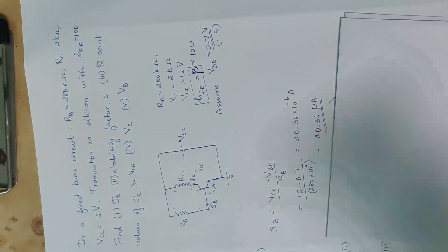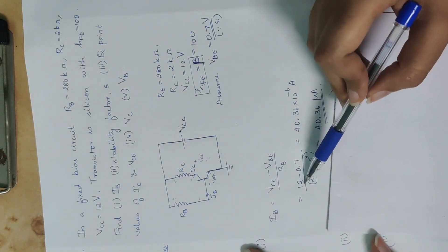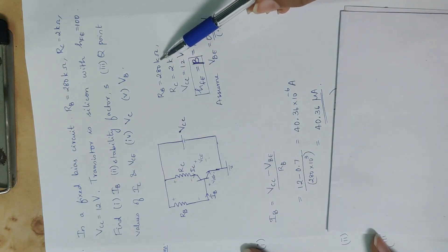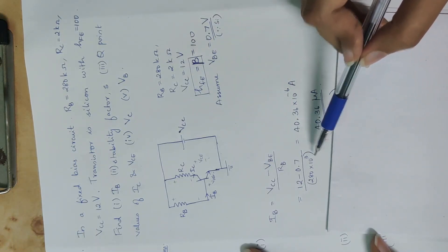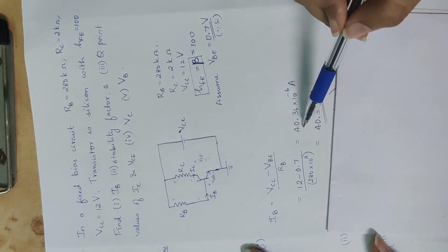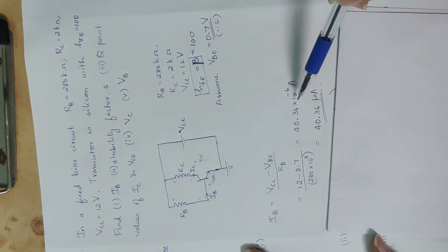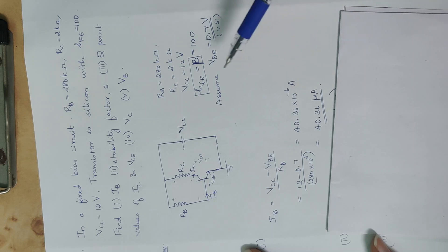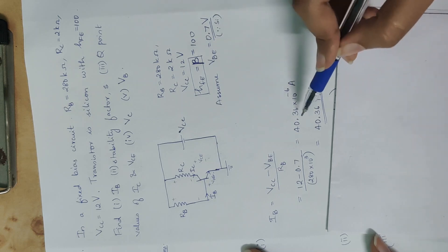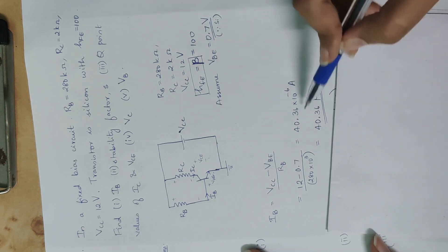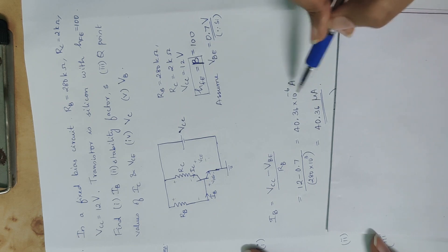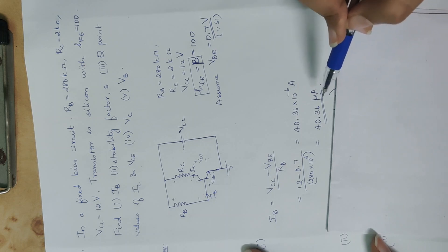Substituting values: VCC is 12 V, RB is 280 kilo ohm (280 × 10³), and VBE is 0.7 V. Calculating IB gives 40.36 × 10⁻⁶ ampere, which equals 4.036 × 10⁻⁵ ampere.